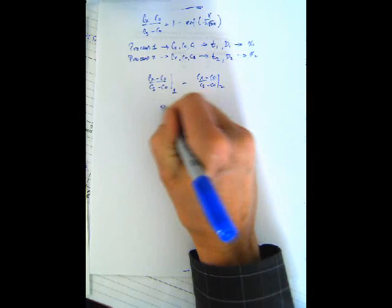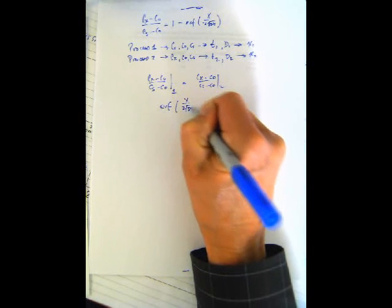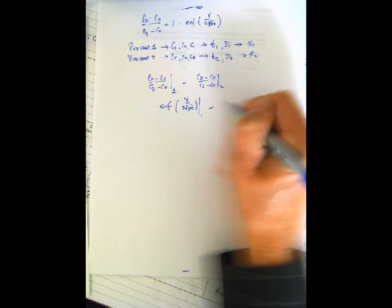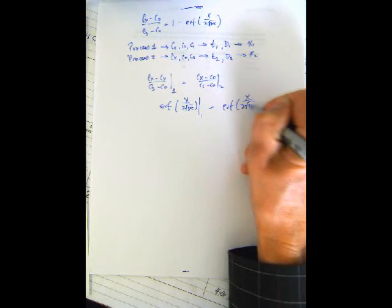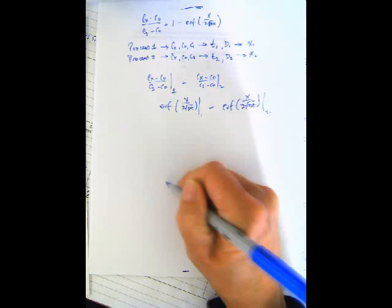Now we can move the 1 over and get rid of the negative sign. And so I end up with the erf of x over 2 times the square root of dt for my initial process is equal to the erf x over 2 times the square root of dt for my new process. Those have to remain constant.